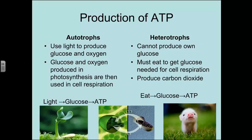This contrasts greatly with heterotrophs, who can't produce their own glucose — so we're kind of mooches — and they have to eat to get their glucose. Both sides are still going to be producing carbon dioxide. Heterotrophs need to eat to get their glucose so that they can burn it and turn it into ATP.